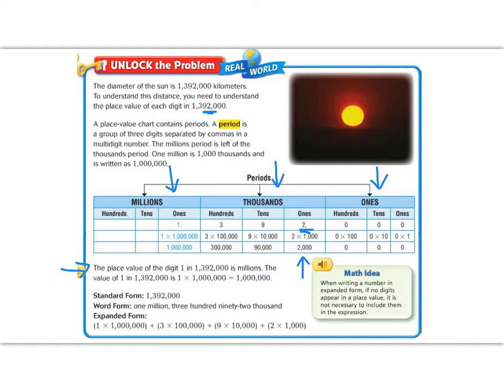The place value of the digit 1 in 1,392,000 is in the millions place. The value of the 1 in 1,392,000 is 1 times 1 million, which is 1 million. So if we look in the millions column now, we have a 1 as the place value. Its expanded form is 1 times 1 million, and 1 times 1 million equals 1 million. So we could write this, remember from fourth grade, in three different ways. Standard form, word form, and expanded form.